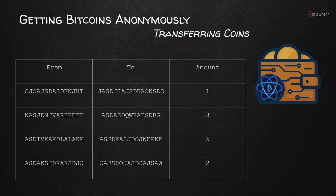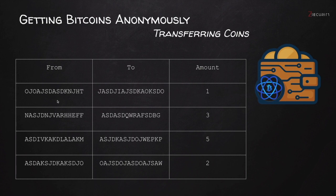There are a number of scenarios where you wouldn't want your address to be linked to another address. For example, if you purchased your coins using a coin exchange that requires ID verification, the address the money comes from will be linked to your real identity. If you send it to your Tails wallet, anyone analyzing the blockchain can easily link your exchange address to the wallet you created on Tails.